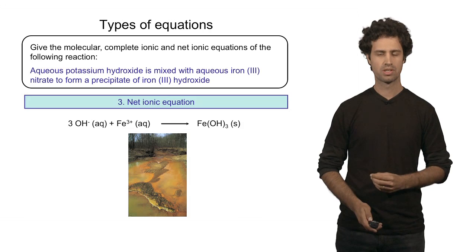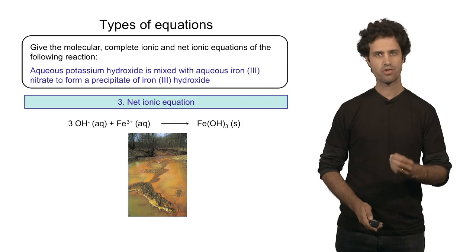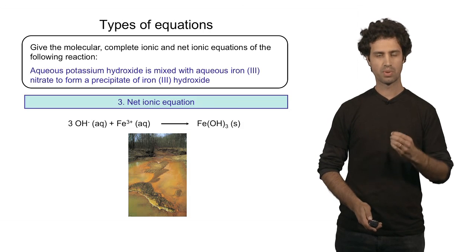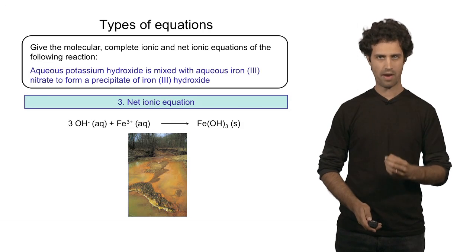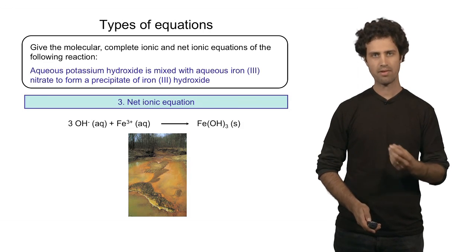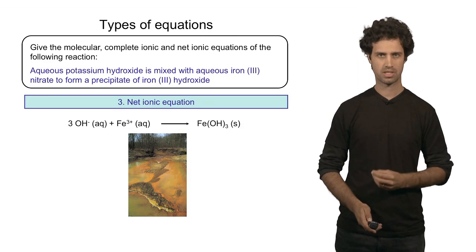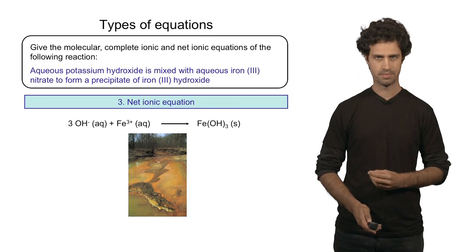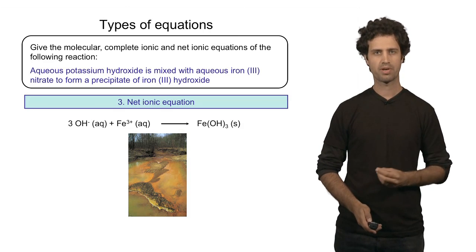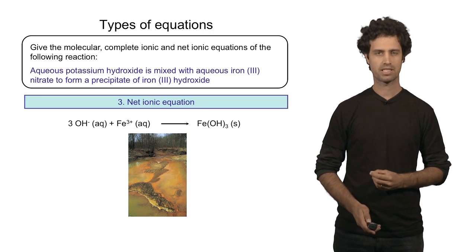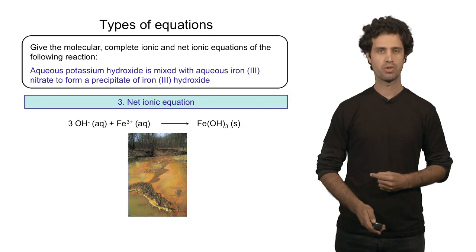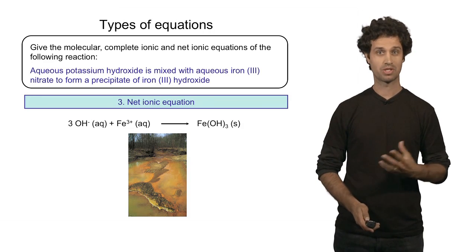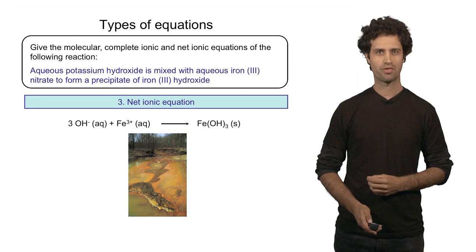Here's an image of a stream that is polluted with iron 3 hydroxide. Iron 3 hydroxide is a yellowish precipitate and is sometimes a byproduct of mining activities. You can see it has completely polluted this stream, which is a pretty frightful sight.